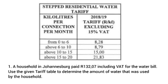We have a question from a previous paper. It shows a stepped residential water tariff table with kilolitres per connection per month, and the tariff rates for the 2018–2019 year given in rands per kilolitre. It also states that those rates do not include 15% VAT — the prices exclude 15% VAT. The question says: a household in Johannesburg paid R132.07 including VAT — use the tariff table to determine the amount of water that was used by this household.